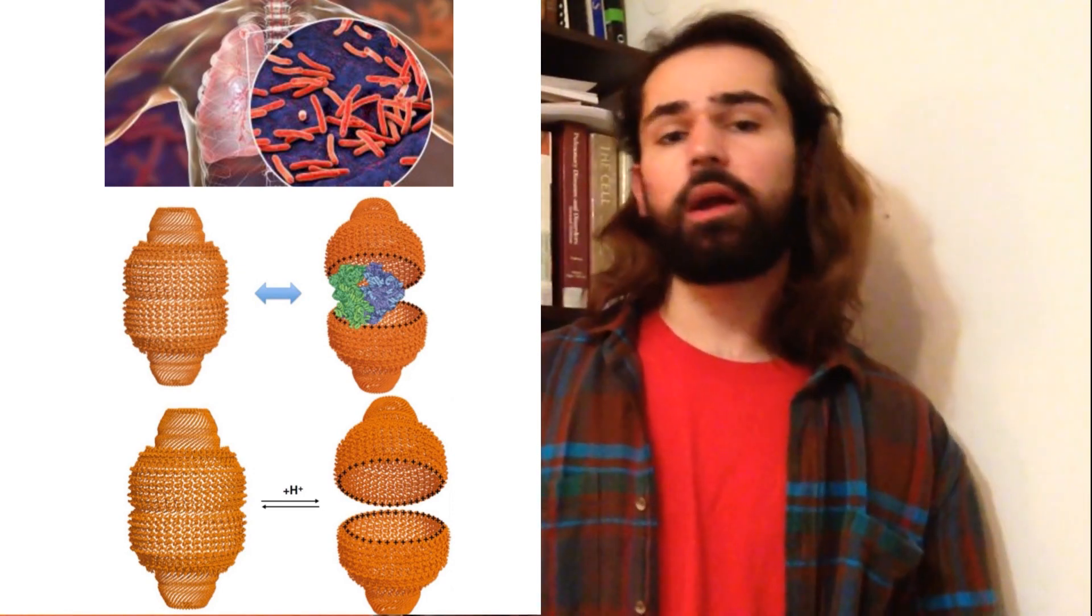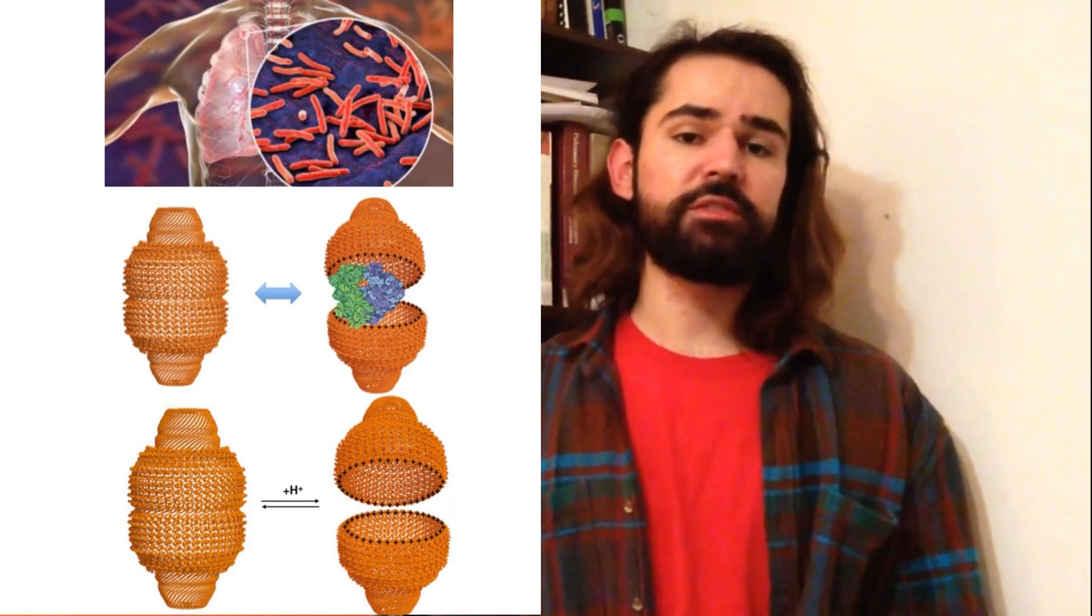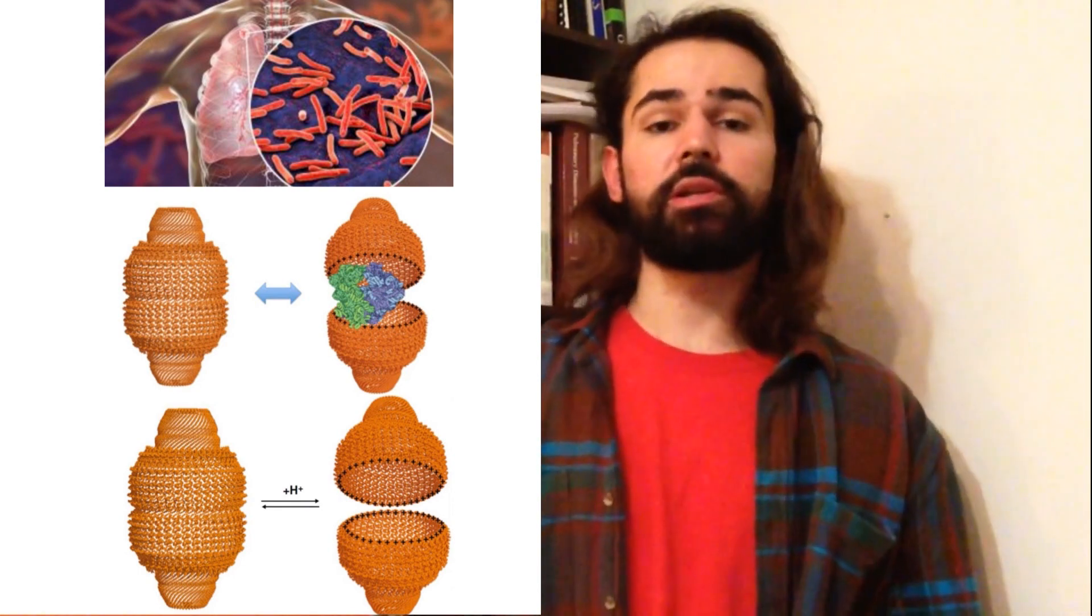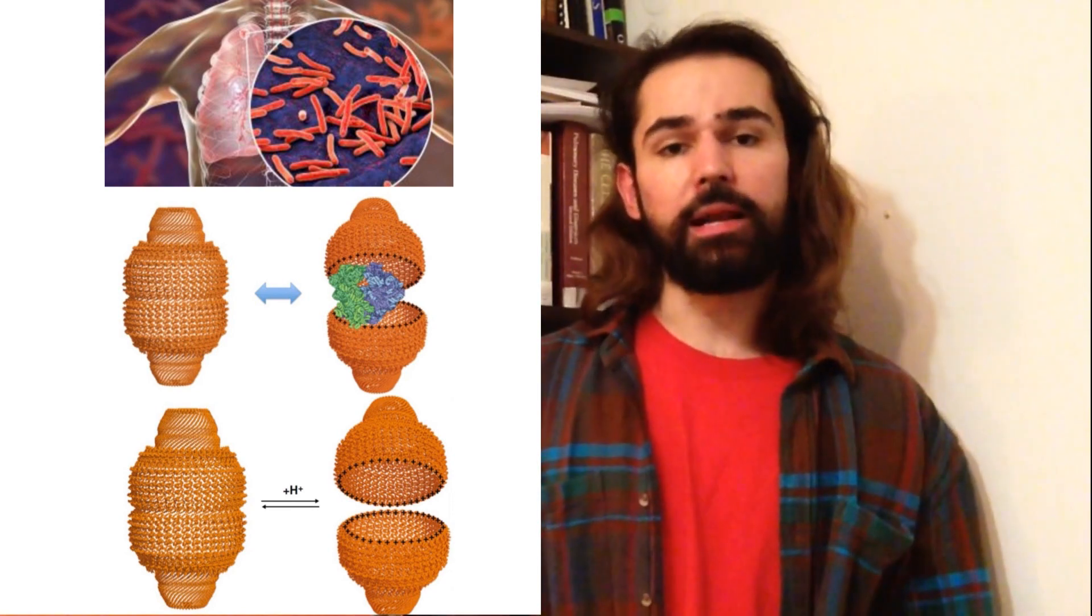Now, in this lung tissue are other replication-permissive cells that are simply going to allow tuberculosis to disseminate itself across the entire body.